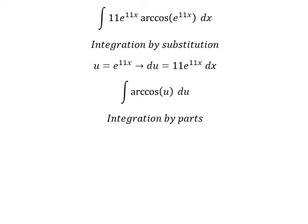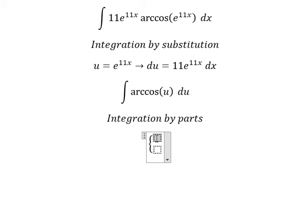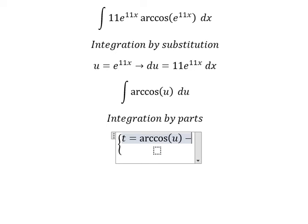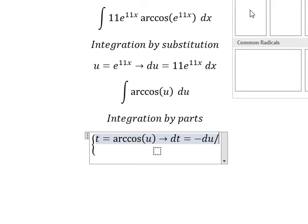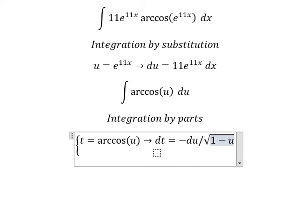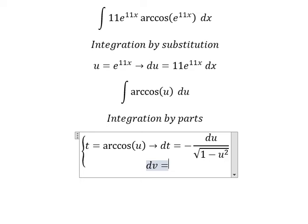I need to put t equal to arccos of u. If I do the first derivative of this one, you get dt equal to negative du over the square root of 1 minus u squared. For dv, you get du, and the integration of dv gives v equals to u.